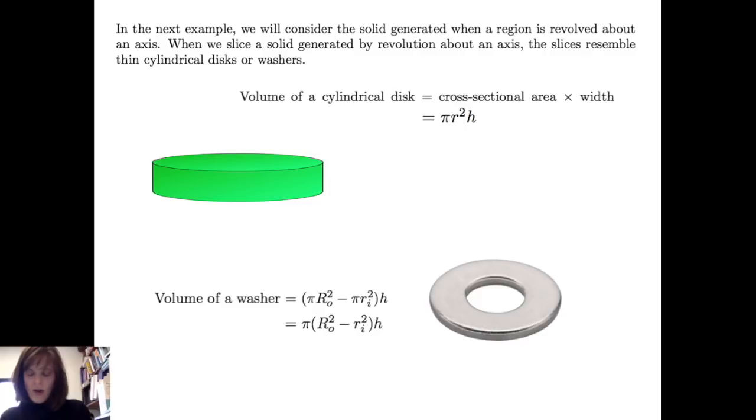Therefore, the area of the cross-section will be π times the outer radius squared minus π times the inner radius squared times the height or the thickness of the washer, and I can change the form of it so it's π times (outer radius squared minus inner radius squared) all times height.